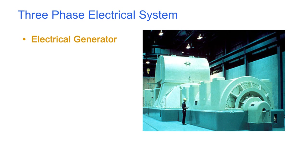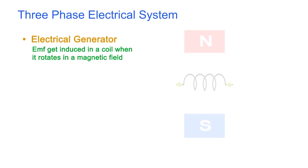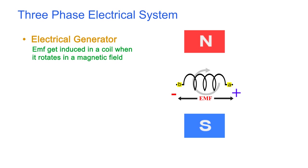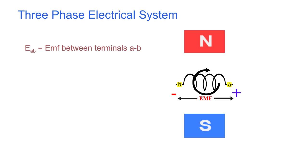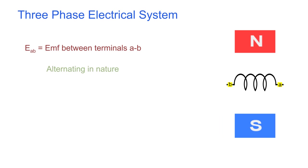Electrical generators use a very common method to generate electrical energy. An EMF, or electromotive force, is induced in a coil when it rotates in a magnetic field. This EMF is alternating in nature.